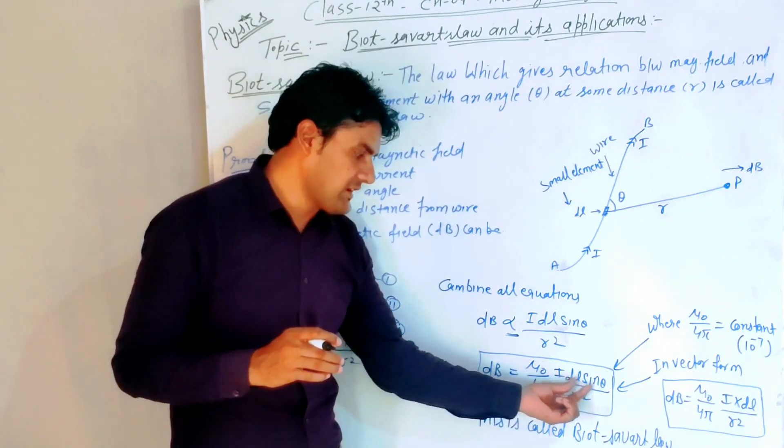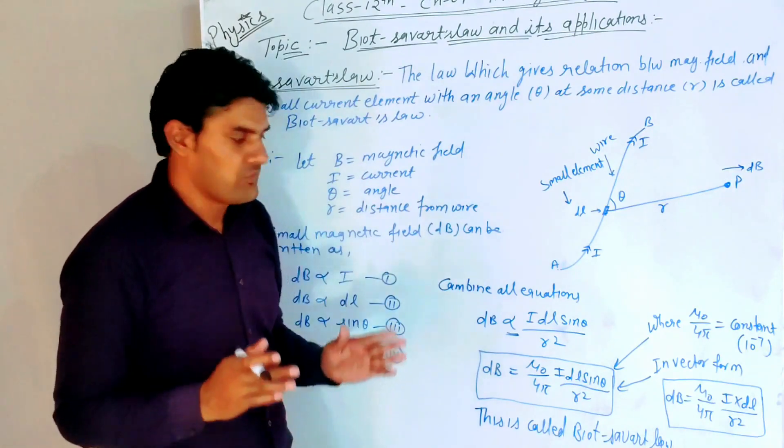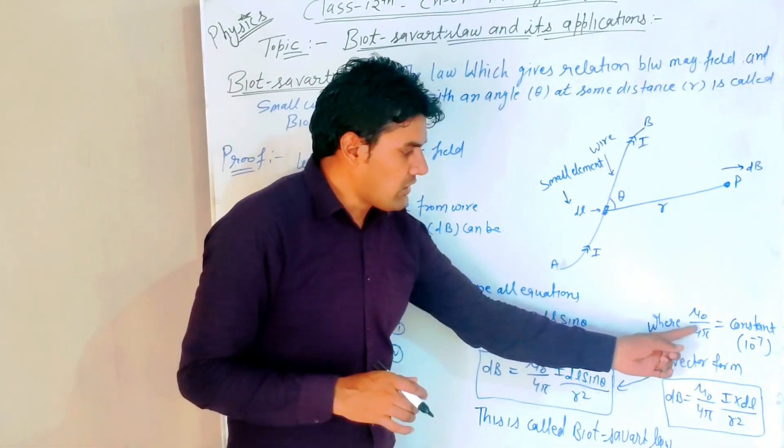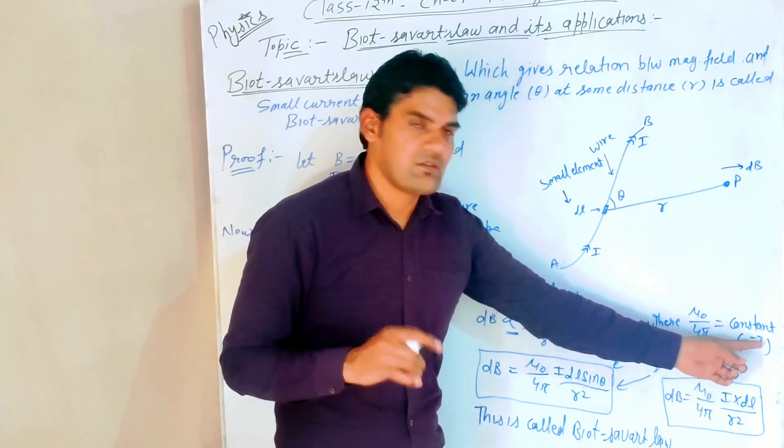Mu naught upon 4 pi is the constant, and its value is 10 to the power minus 7.